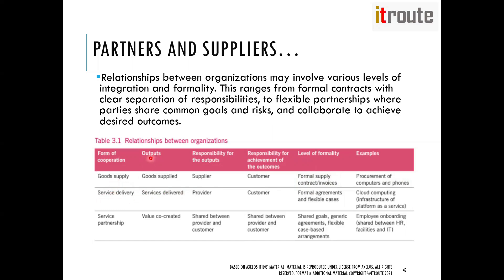In a service delivery relationship, the provider is responsible for the output while the customer is responsible for the outcome. The level of formality includes formal agreements and flexible cases — for example, a service level agreement where you are providing services to customers who consume them, such as cloud computing infrastructure or platform as a service.